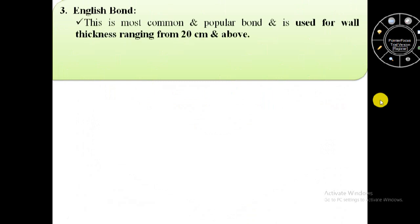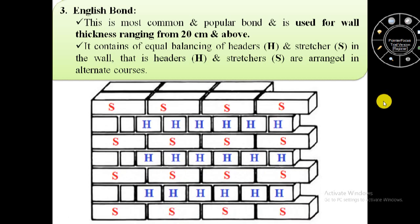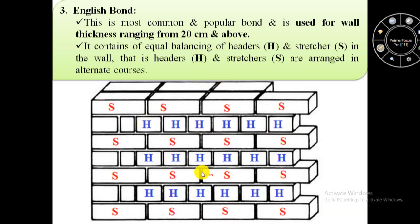Now we will see the third type of bond, that is English bond. English bond is the most common and popular bond and it is used for wall thickness ranging from 20 centimeter and above. English bond consists of equal balancing of headers and stretchers in the wall, that is headers and stretchers are arranged in alternate courses. In this image showing the elevation of English bond, one course contains all stretchers and the next course contains all headers.